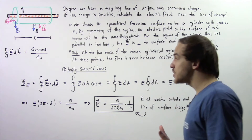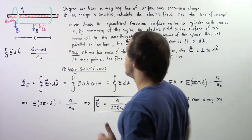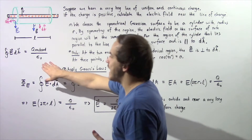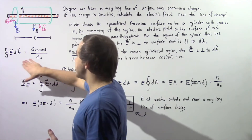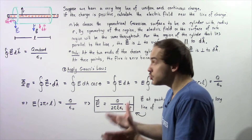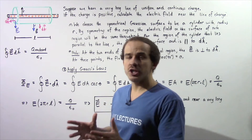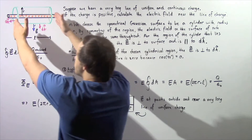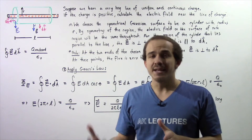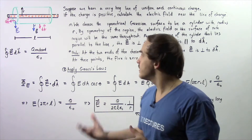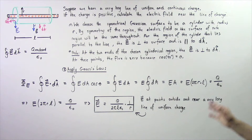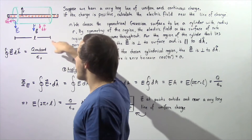To find electric fields at points near this very long thin line of uniform charge, we essentially have to apply Gauss's law. Gauss's law requires us to choose a certain closed region of space that encompasses a certain amount of this charge. We choose a symmetrical region because symmetry allows us to simplify things. So we choose a symmetrical Gaussian surface to be a cylinder with a radius r and a length l.